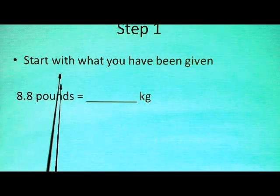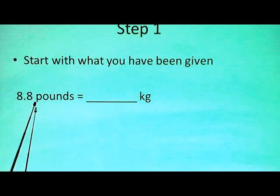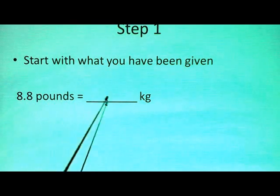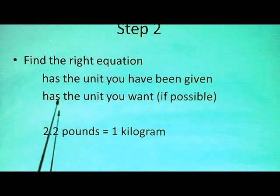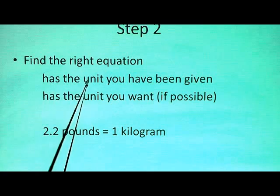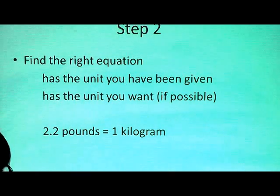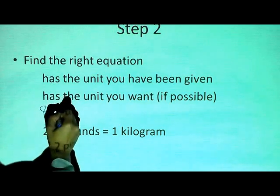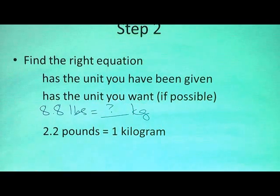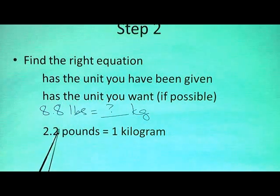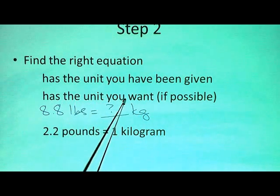Step one: start with what you have been given. Here's a sample problem — 8.8 pounds is equal to how many kilograms? Step one, start with 8.8 pounds. Step two, find the right equation to help you. The right equation has to have the unit you've been given — which is pounds — and it has to have the unit that you want, which is kilograms. So the correct equation to use is 2.2 pounds equals 1 kg.